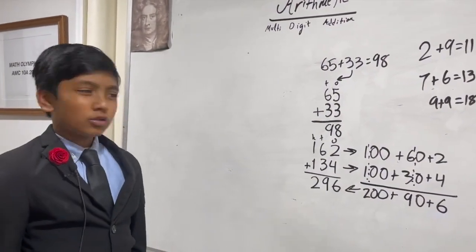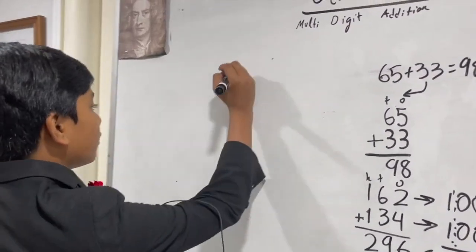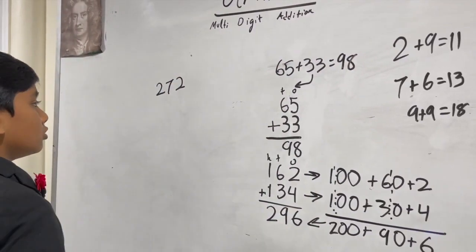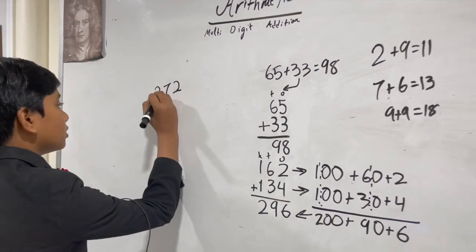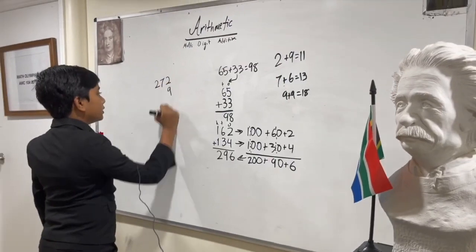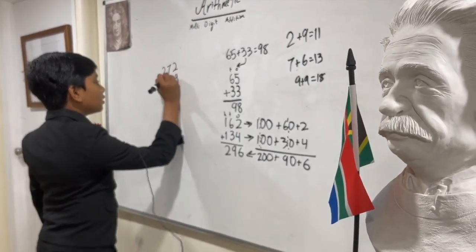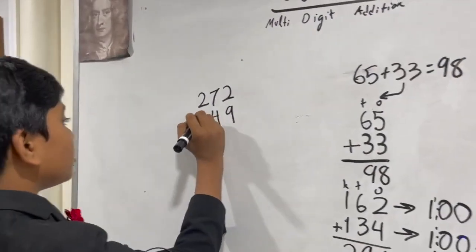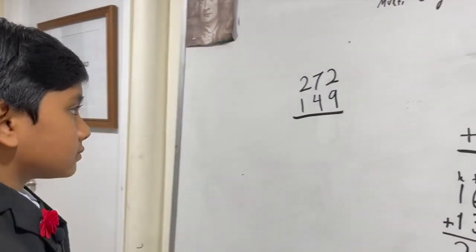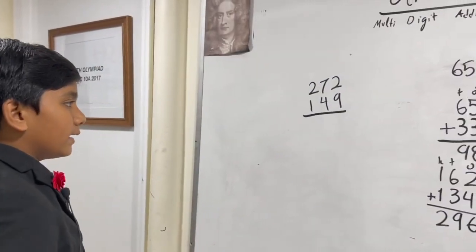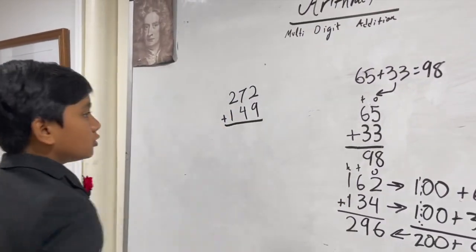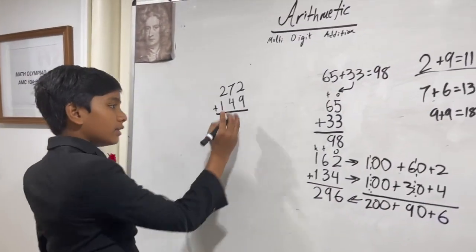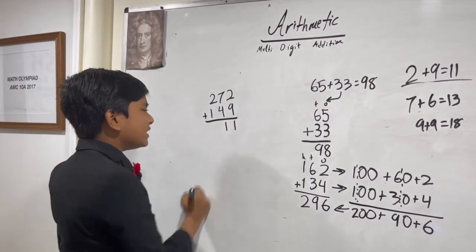Now, let's do one that's a little more tricky. Why don't we do something like 272 and 149. Okay. So, 2 plus 9. That's easy. We mentioned this earlier, in fact. It's 11. But wait a second. 11 is a two-digit number.